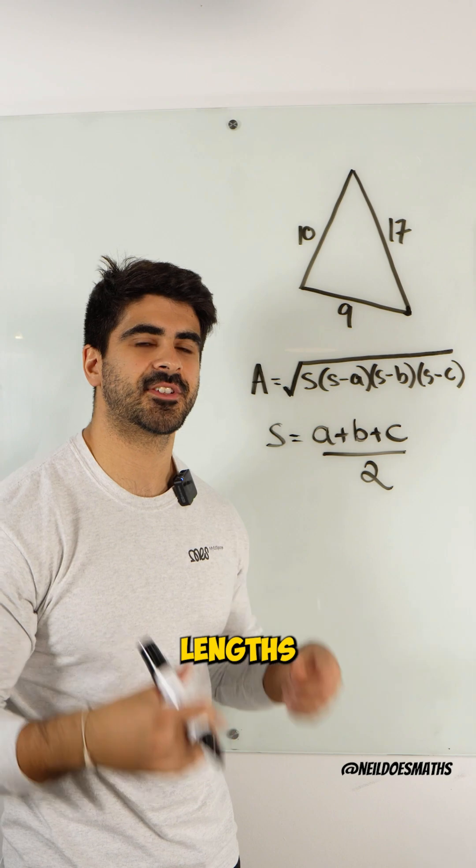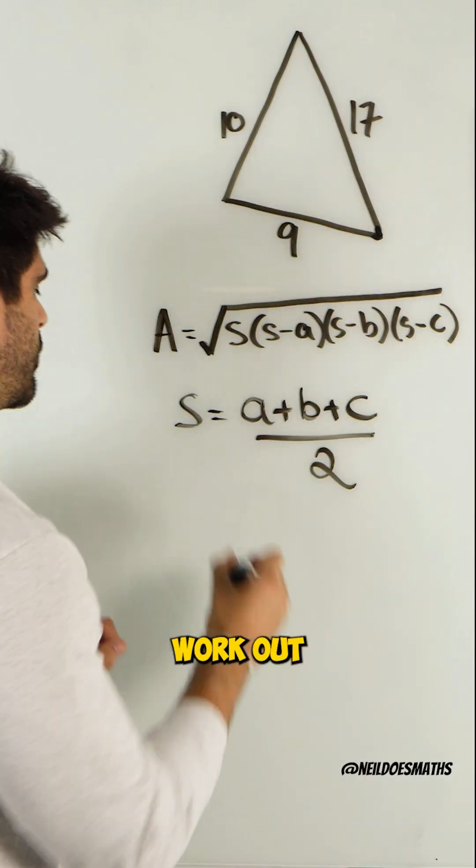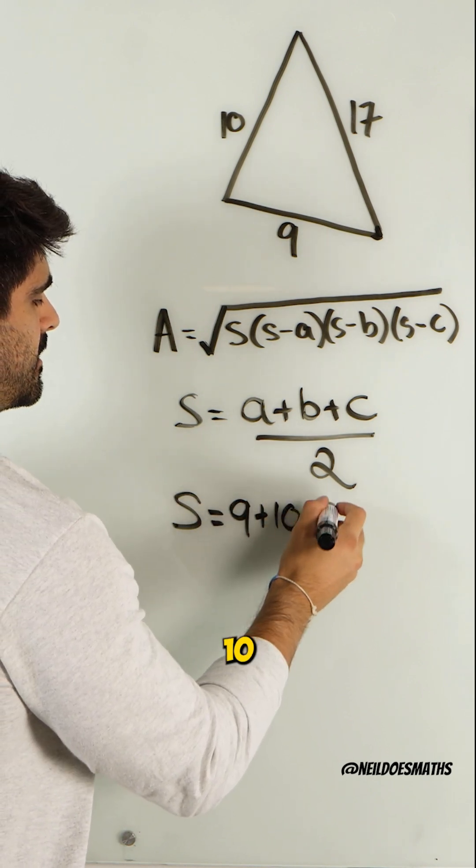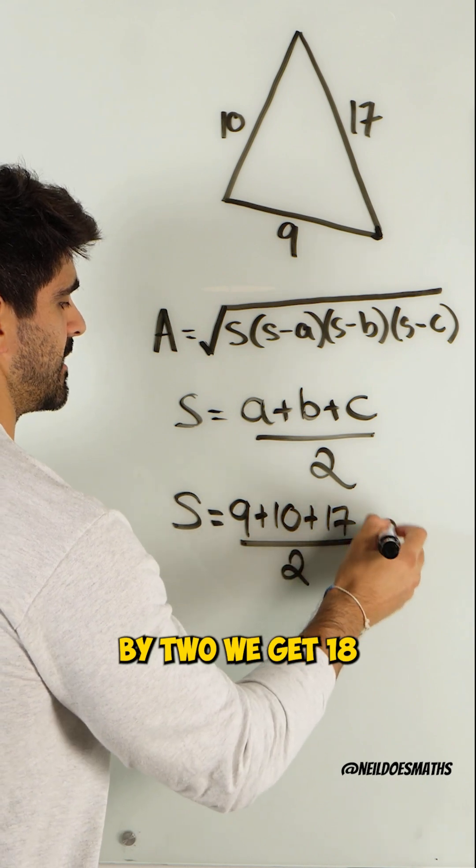This triangle has side lengths 9, 10, and 17. Let's first work out the semi-perimeter. So we're going to add all these values, 9, 10, 17, then divide by two, we get 18.